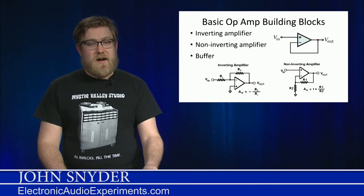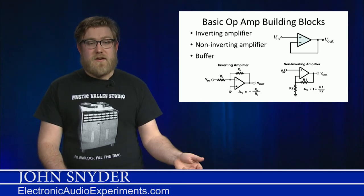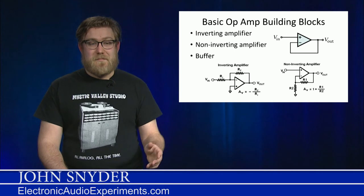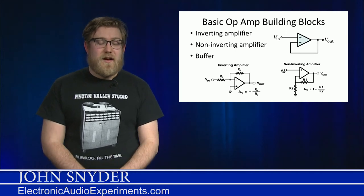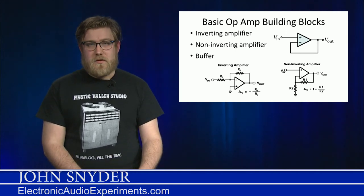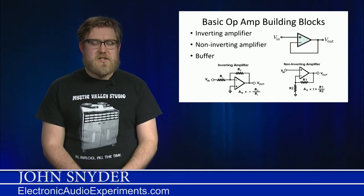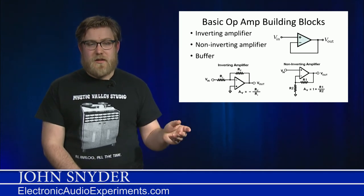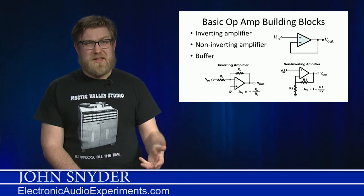And finally, we have the inverting amplifier. So you have this RF and RN, and the gain is just minus RF over RN. This is a very simple device. Again, you only have two resistors. The reason we call it inverting is because the output signal has negative gain. And what does that really mean?